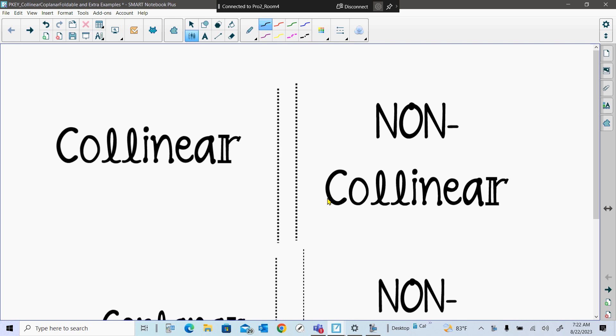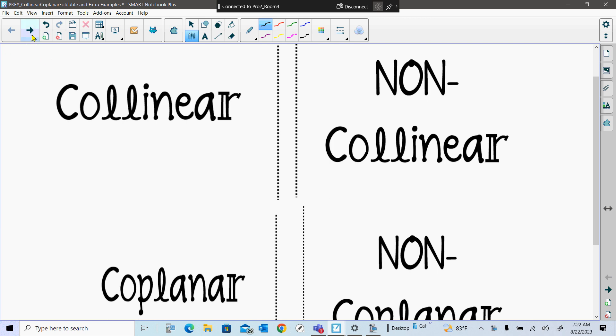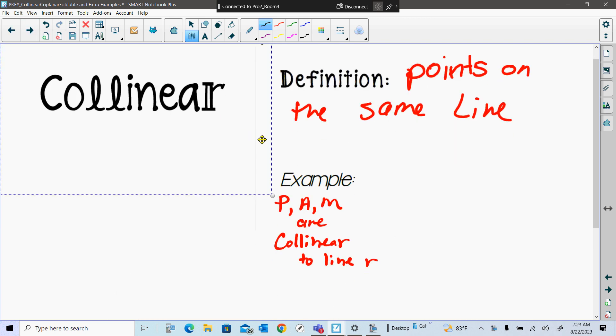Okay, so these are four tabs. The first one I'm going to do is collinear. Now the key word I was trying to get to in this new term is the word linear. Do you all remember linear? What does that indicate? A line, right exactly. And if you look right here there's the word line right there. So the definition for collinear, write this down in your foldable please, it's points on the same line.